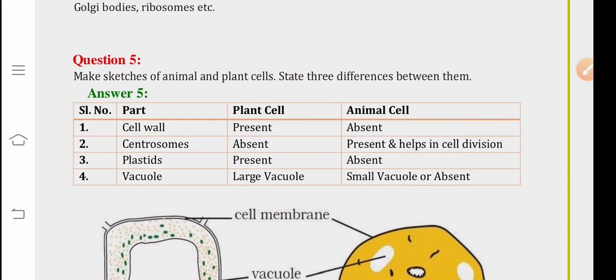Now, if we have to list any three differences, we can write any three of them. Like, the presence of cell wall. The cell wall is present in case of the plant cell and absent in animal cell. Plastids are present in plant cell and absent in animal cell. Vacuoles are large in plant cells and small or absent in animal cells.